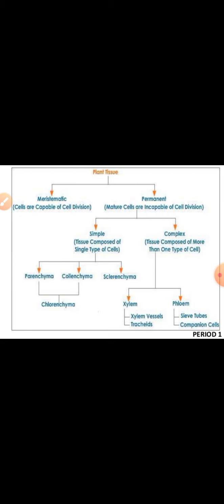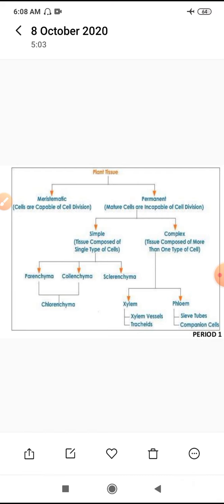Now, Complex Permanent Tissue. What is meant by complex permanent tissue? This type of tissue is composed of more than one number of cell types. This is called heterogeneous nature of tissue. For example, xylem and phloem. In xylem, there are four components: one is called Tracheids or vessels, Xylem Parenchyma, and Xylem Fibers. There are four components composed into one type of tissue — that is why it is called complex tissue.